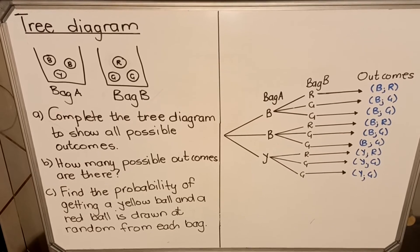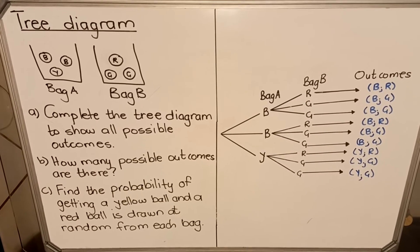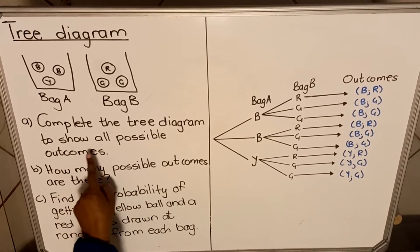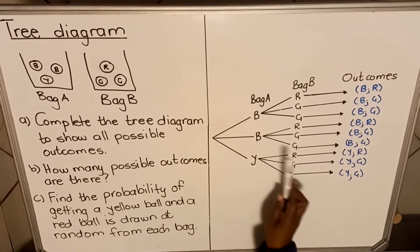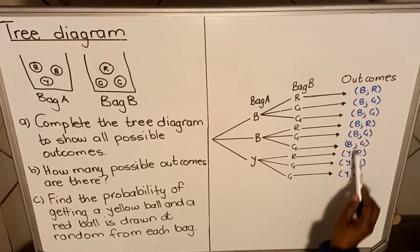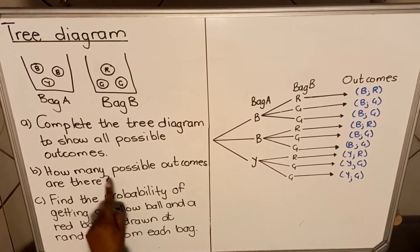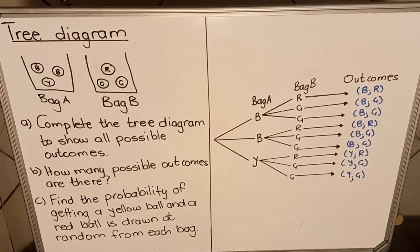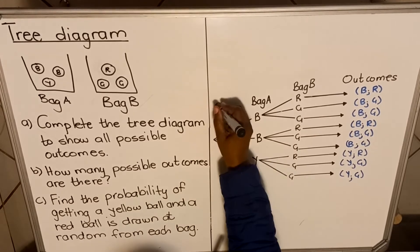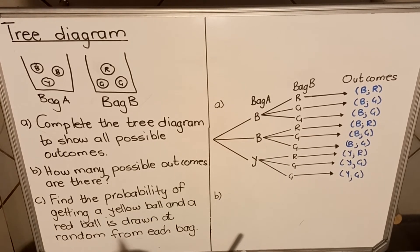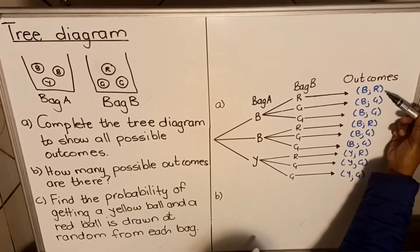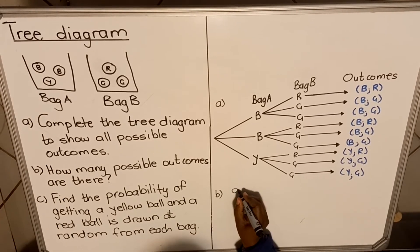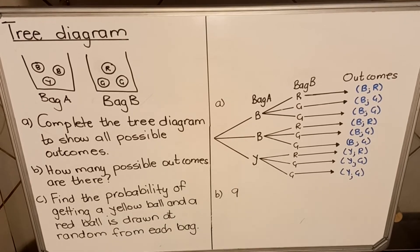Now let's look at the questions. Part A says complete the tree diagram and show all possible outcomes — so this is our tree diagram and these are all possible outcomes. Then Part B asks how many possible outcomes are there. You count them: one, two, three, four, five, six, seven, eight, nine. So there are nine possible outcomes. Your answer is nine.